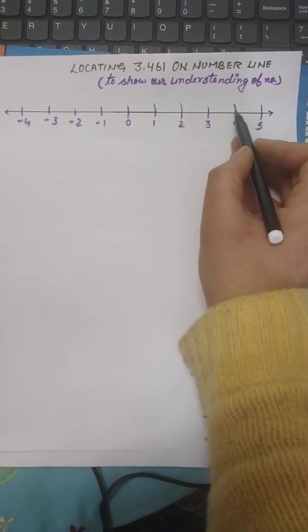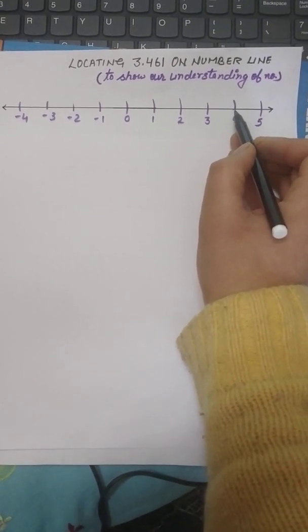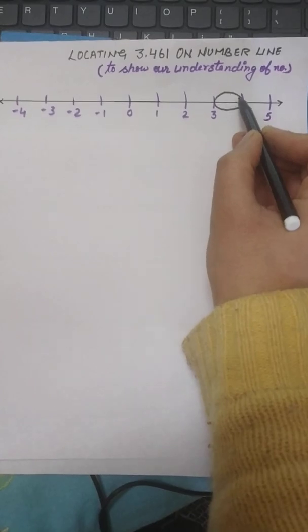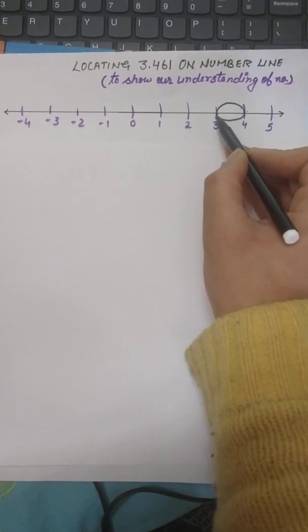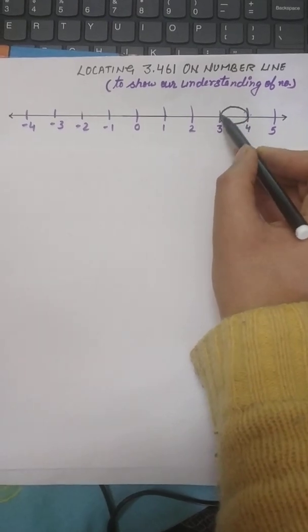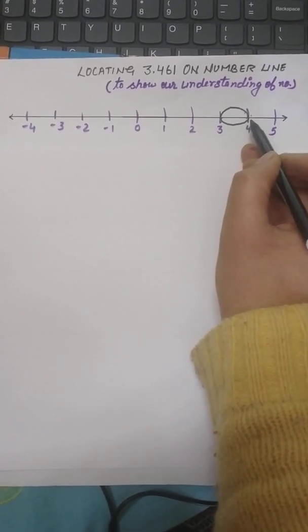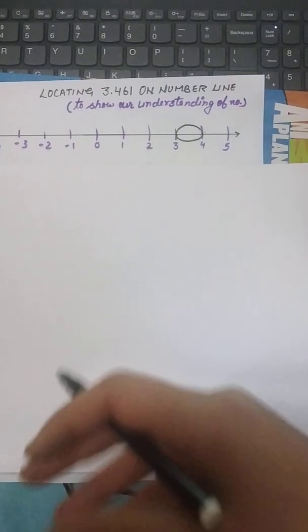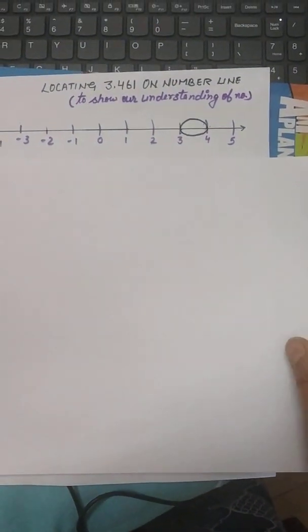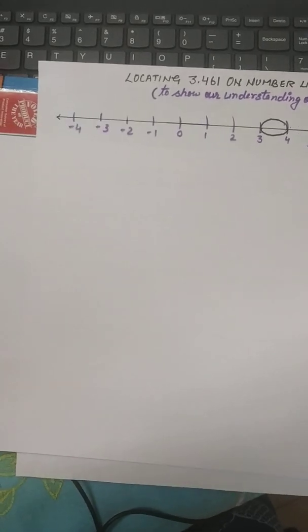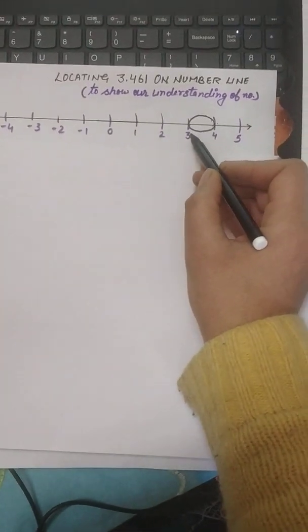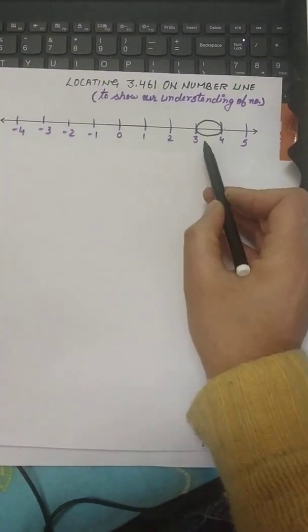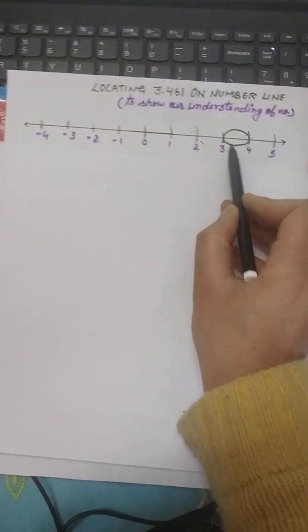So while showing this to the exam, while showing your understanding of the number, you can put a magnifying glass like this. Now this magnifying glass, it is between 3 and 4 because which area you are going to magnify, you have to just strictly put this magnifying glass there only. Now if you'll open it, now we are showing we are expanding, we are focusing on this. So when we focus on this, what are we going to do? We'll focus on this, we'll open this, we'll expand this and we'll do 10 parts in this.